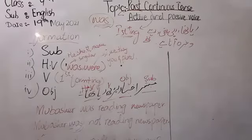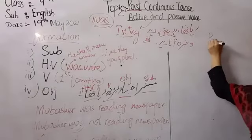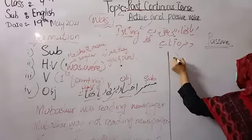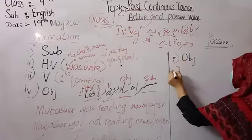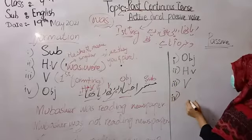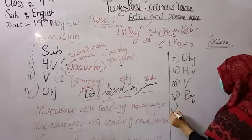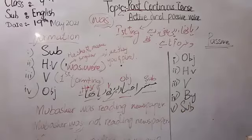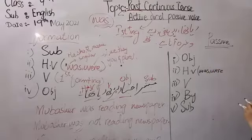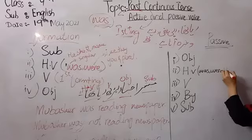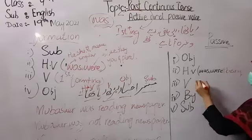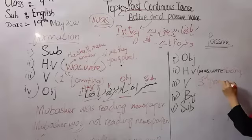Now let's talk about the passive voice. The passive voice formation is: subject changes into object, then same helping verb comes, then the main verb, at fourth comes the addition of 'by', and at fifth comes the subject. The helping verb remains the same as in active voice (was/were), but we add 'being'. The verb is always in the third form.